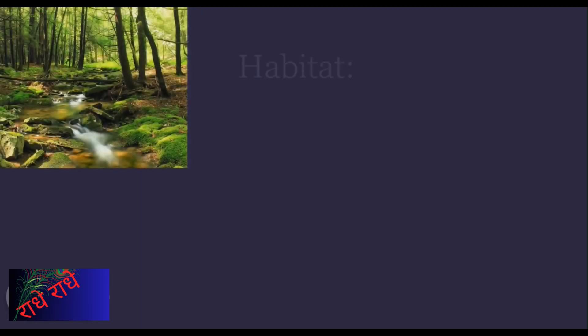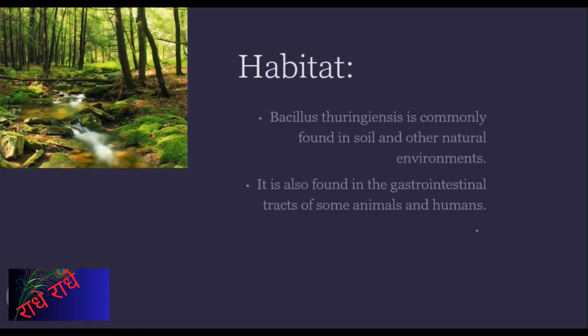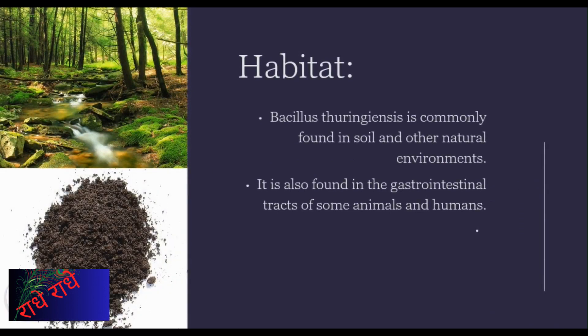Bacillus thuringiensis is a bacteria species found in a variety of habitats, ranging from soil to the gastrointestinal tracts of animals and humans. With its potential for pest control being recognized for centuries, it is a safe and natural means to controlling damaging insects' populations.